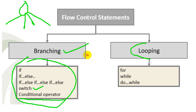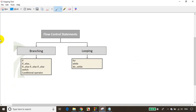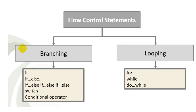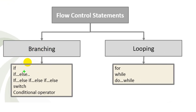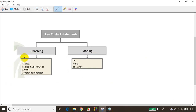For looping, if you want to do repetitive tasks — for example, print 'hello' five times — you can use a for loop, a while loop, or a do-while loop. For loop, while loop, and do-while loop are categorized under looping. We'll see examples and real-world use cases for these in further modules.